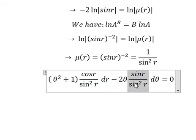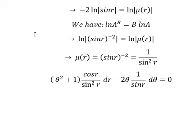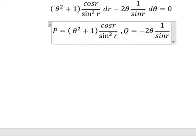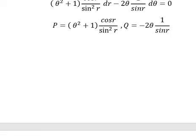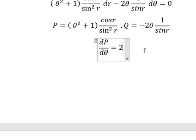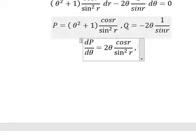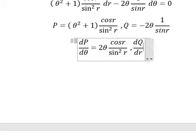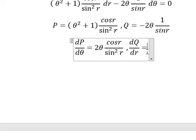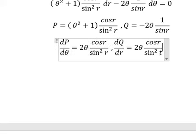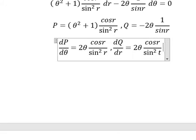So this one becomes 1 over sine r, and this one also becomes 1 over sine r. Now I will put B equal to this one and Q equal to this one. If we do the first derivative of B with respect to theta, we get 2 theta cosine r over sine squared r. And if we do the first derivative of Q with respect to r, we also get 2 theta cosine r over sine squared r. We see that this one and this one are the same — so that is exact.